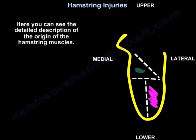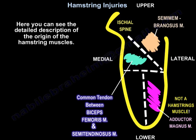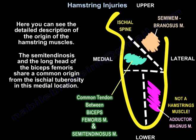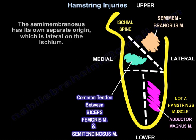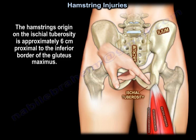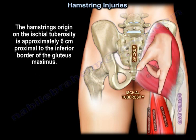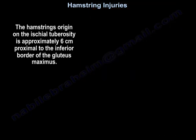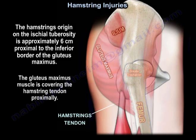Here you can see the detailed description of the origin of the hamstring muscles. The semitendinosus and the long head of the biceps share a common origin from the ischial tuberosity in a medial location. The semimembranosus has its own separate origin, which is lateral on the ischium. The hamstring origin on the ischial tuberosity is approximately 6 cm proximal to the inferior border of the gluteus maximus, which covers the hamstring tendon proximally.